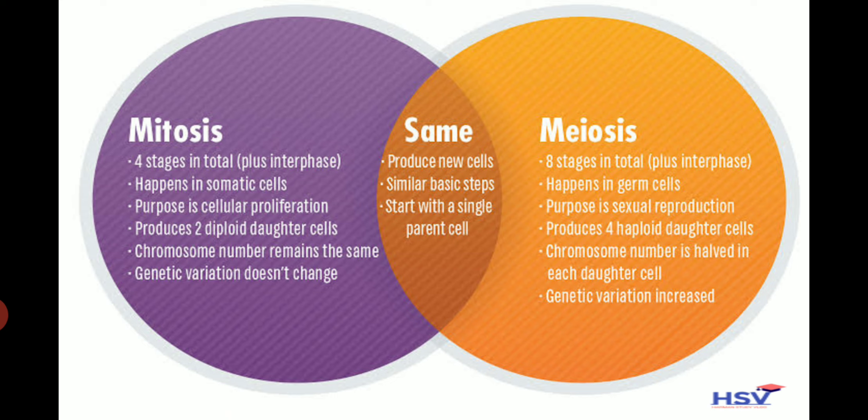In mitosis the chromosome number remains the same in daughter cells. In meiosis the chromosome number is half in each daughter cell. In mitosis genetic information doesn't change, whereas in meiosis genetic variation increases.